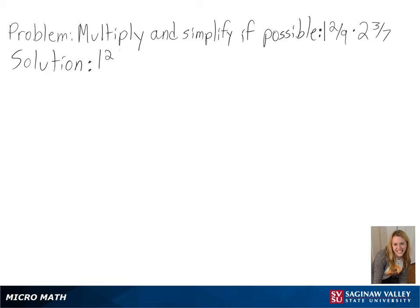Our problem is to multiply and simplify if possible. The first part of our solution is to convert our mixed numbers into fractions so we can multiply across. Converting these, we get 11 over 9 times 17 over 7.